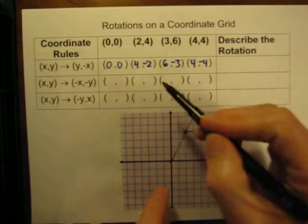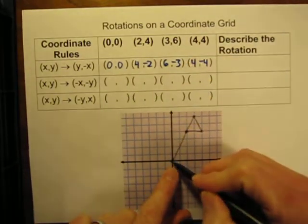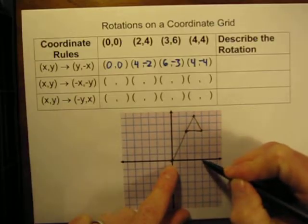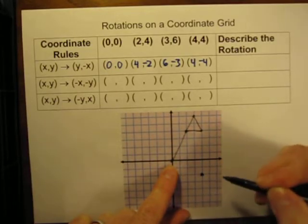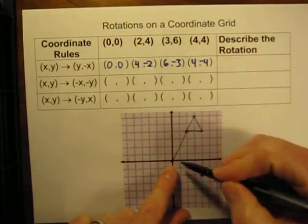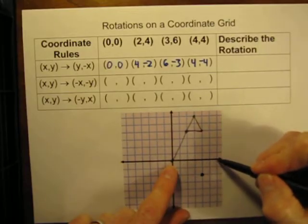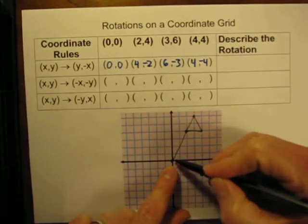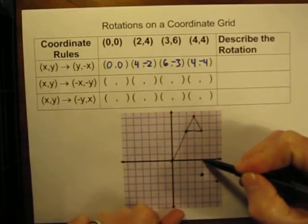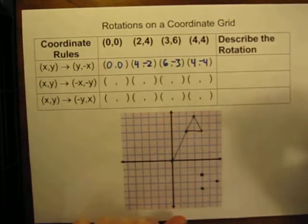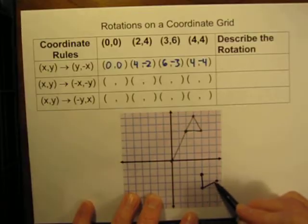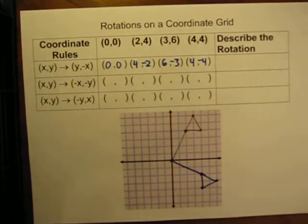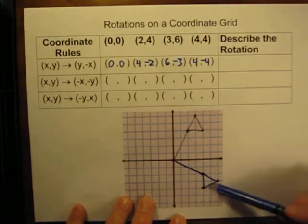Now let's graph those points on the coordinate grid. We start with (0,0), still right at the origin. The next point is (4, -2): right 4, down 2. The next is (6, -3): right 6, down 3. And the final point is (4, -4): right 4, down 4. We connect those with a line, and there is our new flag. It has rotated from the original position down to this new position. The center of rotation is the origin.